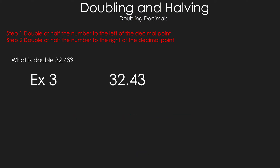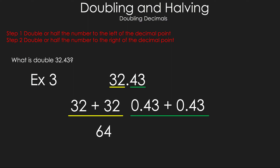Example 3 has two digits in the decimal part. We separate them and follow the same steps. Double 32 by adding it to itself to get 64. Then add 43 hundredths to itself to get 86 hundredths. Combining gives 64 and 86 hundredths as the answer.